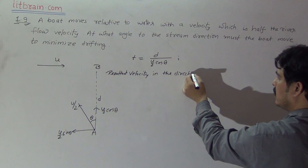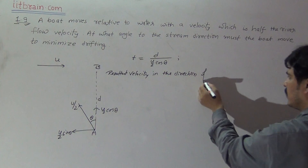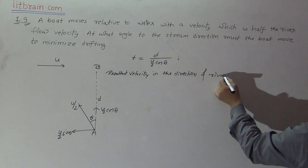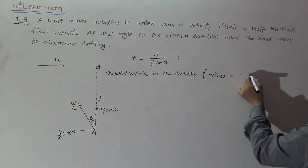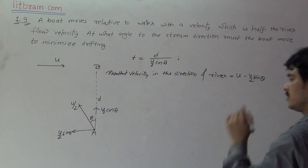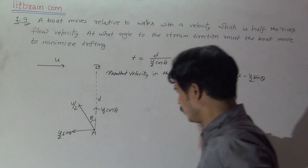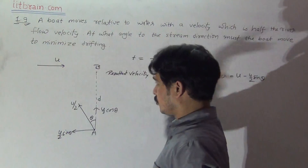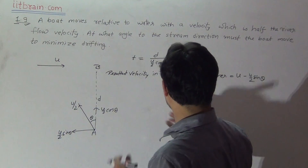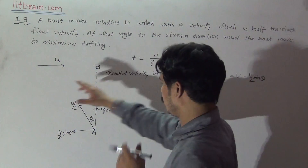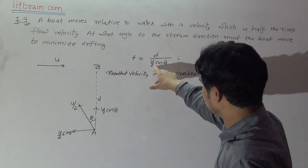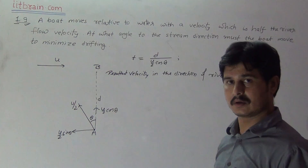The resultant velocity in the direction of the river equals u minus u/2 sinθ. Here, u/2 sinθ is the boat's upstream velocity component and u is the river velocity. So the resultant velocity along the river direction is u minus u/2 sinθ.